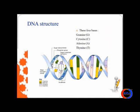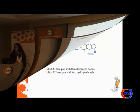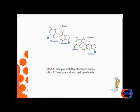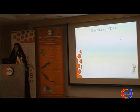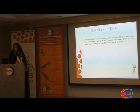DNA has four bases: guanine, cytosine, adenine, and thymine. The structure of guanine and cytosine is paired with three hydrogen bonds, as you can see in this picture. Adenine and thymine are paired with two hydrogen bonds. For the significance of DNA, because of its nano-fabrication and self-assembling characteristics, it has extraordinary physical and chemical behavior.